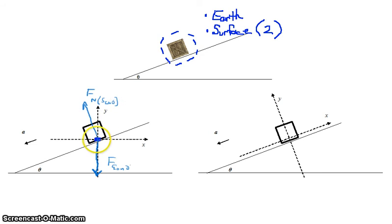Parallel to the surface, impeding the motion, is your frictional force. So we have friction of surface on the object.